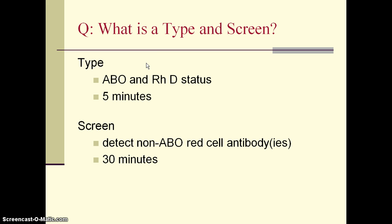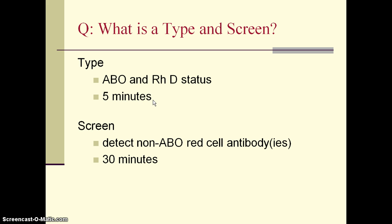When you order a transfusion of a blood product for your patient — let's say red cells — what testing do you need to request before the blood bank is able to issue compatible products? The most basic testing required is a type and screen. These two are done concurrently by the analyzer; the blood type takes five minutes and the screen takes 30 minutes, so the total testing time is about 30 minutes.